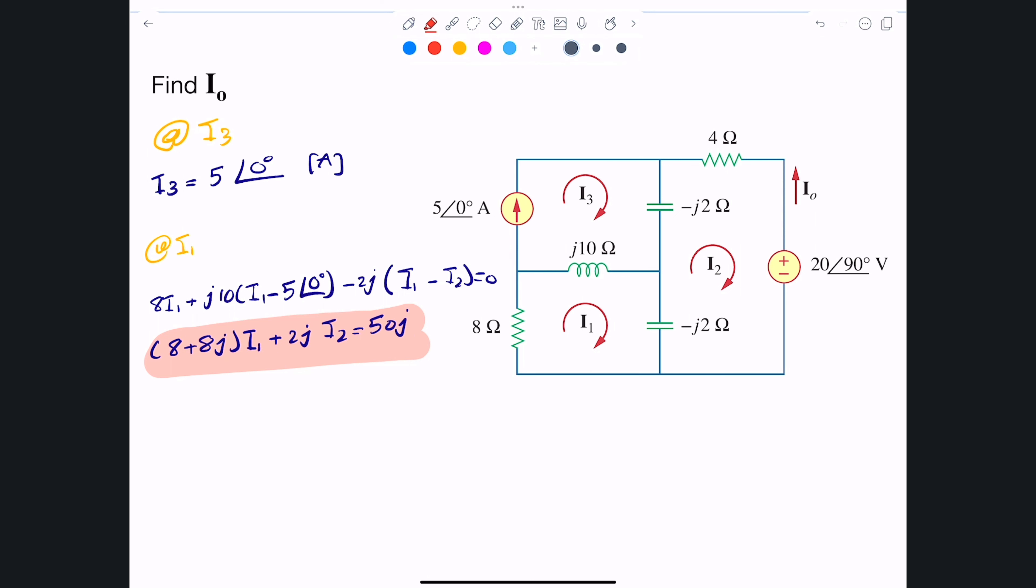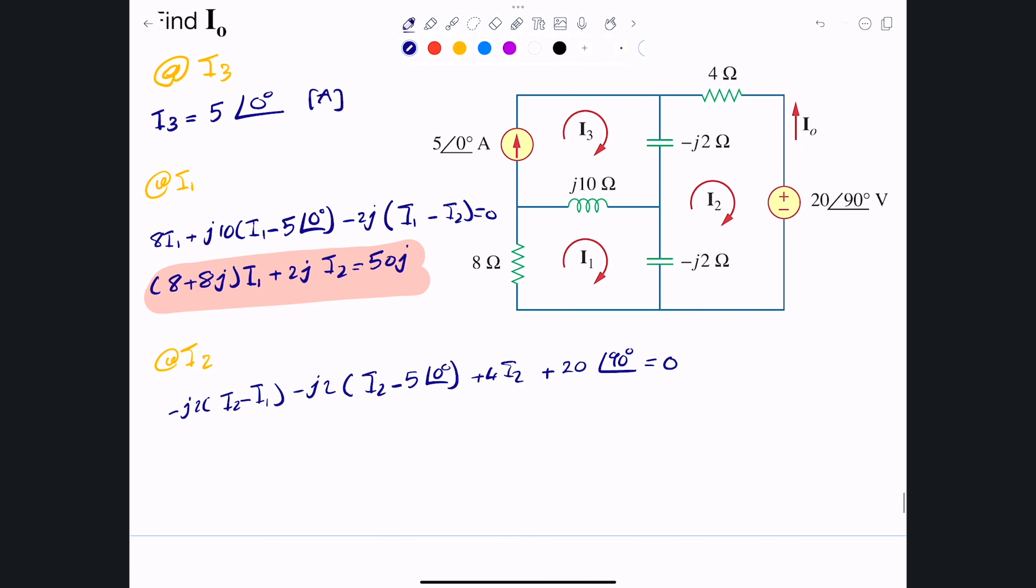Now we go ahead and we'll write the mesh equation at the second mesh. What we'll end up with is -j2(I2 - I1), -j2 again, this is basically one for here and one for here, and this one is I2 minus I3 which I know is 5 amps. Then what we have is plus 4·I2 plus of course this voltage that I know which is 20∠90° and that equals zero.